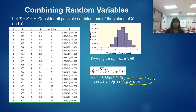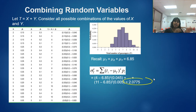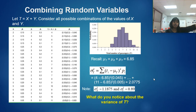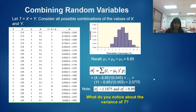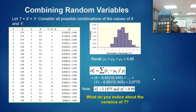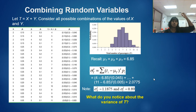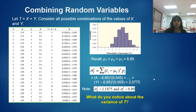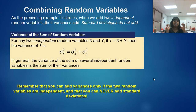The variance of T is 2.075 — that's the total variability of T. They also calculated variance of X as 1.1875 and variance of Y as 0.89. Notice: 1.1875 plus 0.89 equals 2.0775. We could have just added the variances of X and Y together to get the variance of T. The key rule: you can add variances of two independent random variables, but you cannot add their standard deviations.